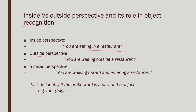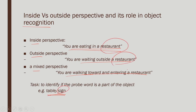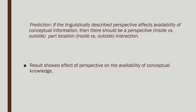They did an inside versus outside perspective study on its role in object recognition. Three perspectives were used: inside — 'you are eating in a restaurant'; outside — 'you are waiting outside a restaurant'; and mixed — 'we are walking toward and entering a restaurant.' The task was to identify whether a probe word was part of the object — for example, is 'table' a part of a restaurant? Is 'sign' a part of a restaurant? First the scene-setting sentence is presented, then subjects decide if the probe word is part of the described scene.